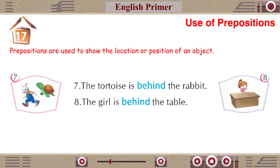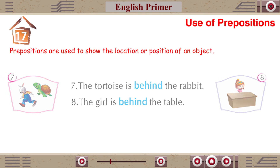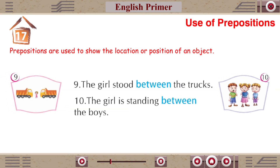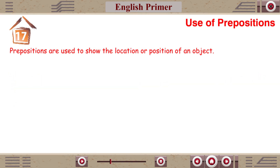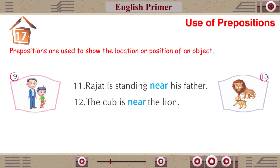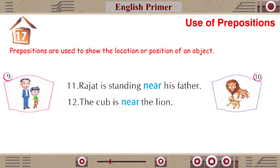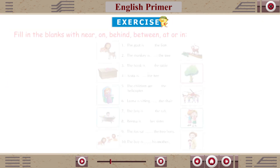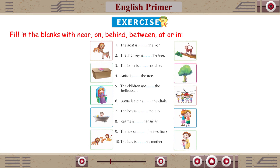7. The tortoise is behind the rabbit. 8. The girl is behind the table. 9. The girl stood between the trucks. 10. The girl is standing between the boys. 11. Rajat is standing near his father. 12. The cub is near the lion. Exercise: Fill in the blanks with Near, On, Behind, Between, At or In.